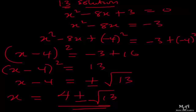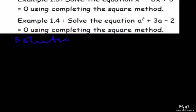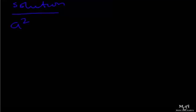This is how we can solve a quadratic equation using completing the square. Now let us see Example 1.4. The question says: solve the equation a squared plus 3a minus 2 equal to 0 using the completing the square method. Like I told you, the first thing you do is divide the equation into left-hand side and right-hand side. This becomes a squared plus 3a equal to positive 2.